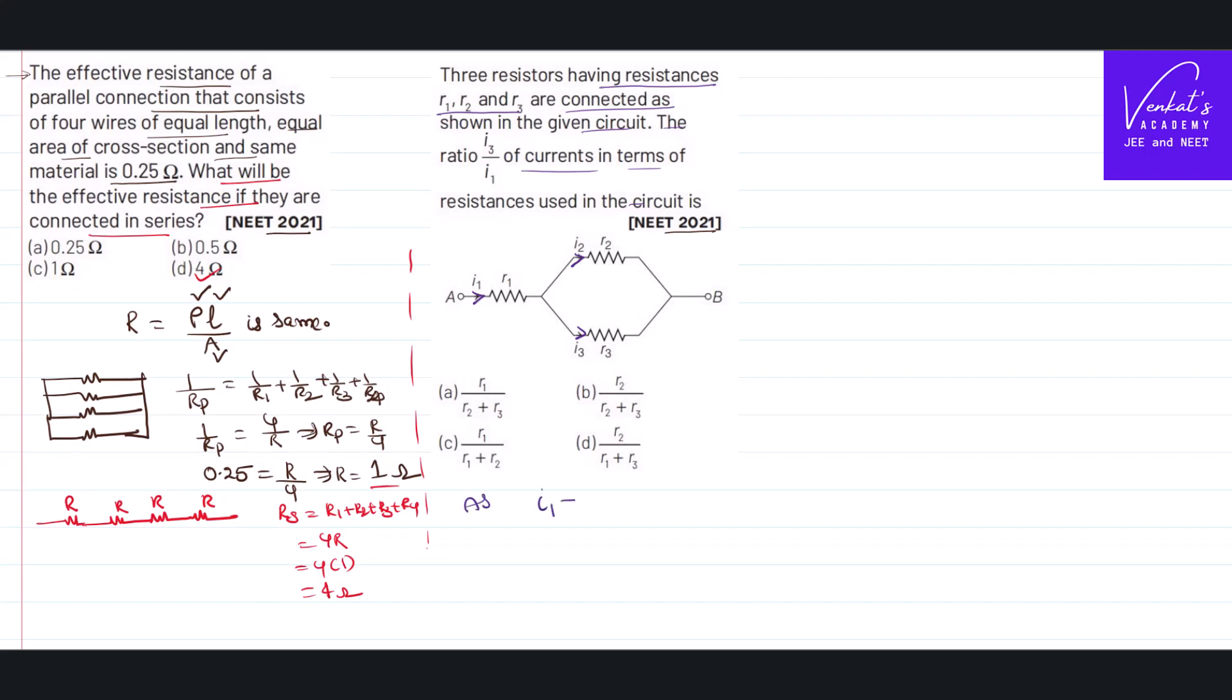But we can say, as per Kirchhoff's first law, as current is conserved, current coming towards the junction is i₁, currents leaving the junction is i₂ + i₃. As you want i₁ and i₃'s ratio, i₂ can be written as i₁ - i₃.